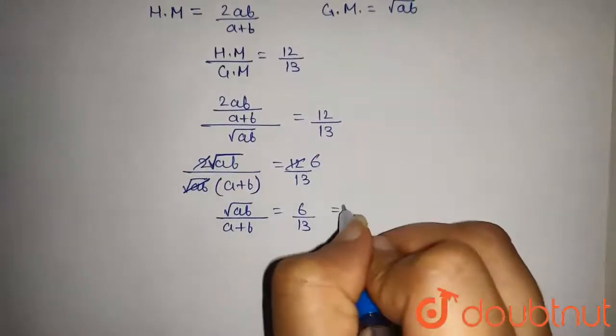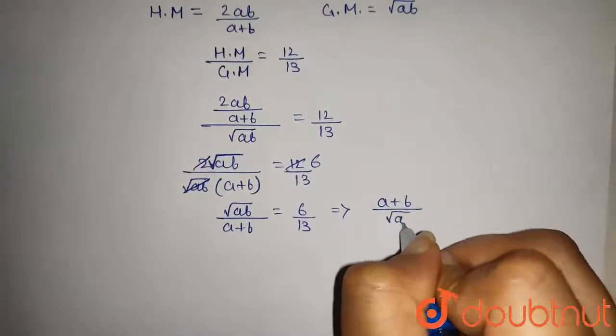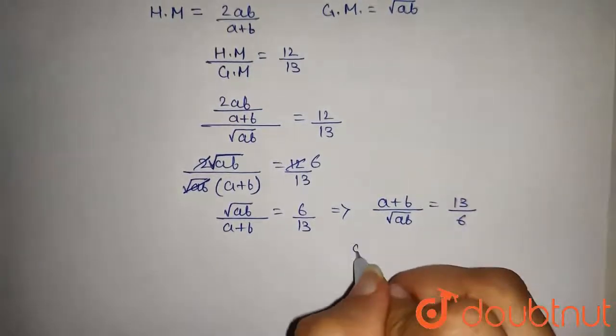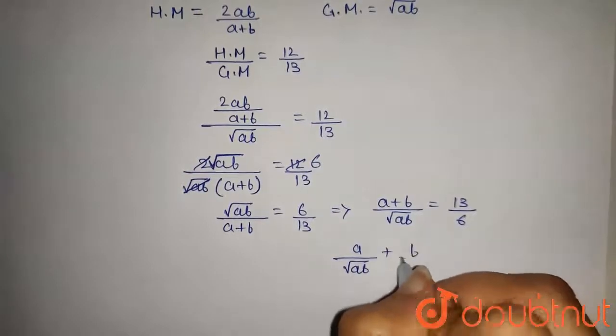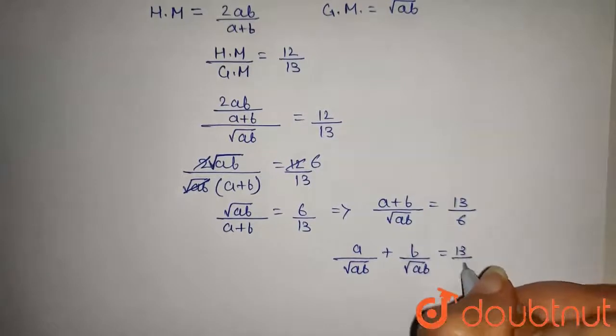On reciprocating it, we get A plus B upon under root AB is equal to 13 by 6, or this can be written as A upon under root AB plus B upon under root AB is equal to 13 by 6.